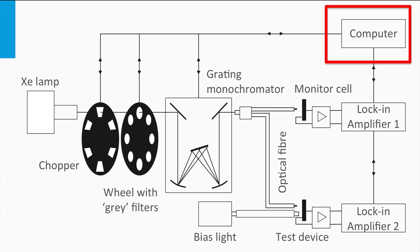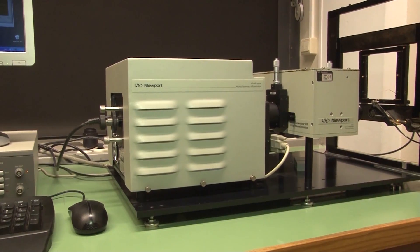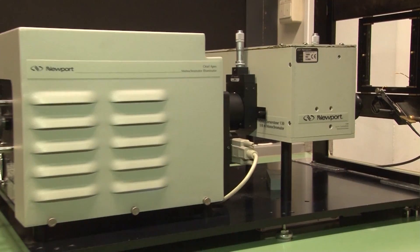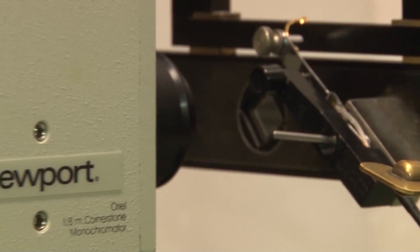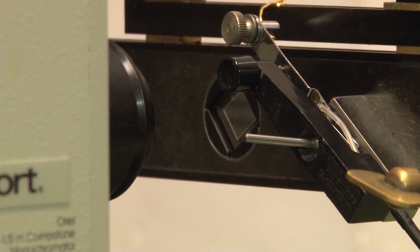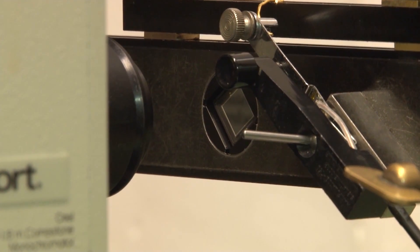This is an example of a home-built EQE setup which is used to measure the spectral response of small lab-scale solar cells. Here we see the xenon light source and the monochromator. To demonstrate the operation of the monochromator, we are going to look at the light output incident on a piece of paper in the dark. Here you see a condition in which only a narrow wavelength range in the blue light is incident on the paper. Now we move from blue to green light, and now from green to red light.